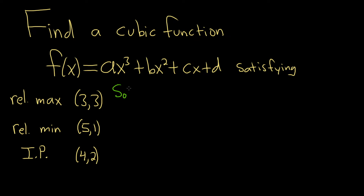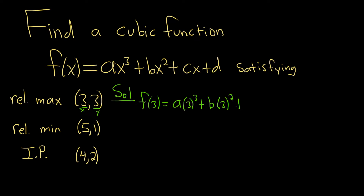Let's carefully work through this. The relative max is (3, 3). That means if you plug 3 into this function you get 3, because this is the x value and this is the y value. So f(3) = a(3³) + b(3²) + c(3) + d = 3. Cleaning this up: 27a + 9b + 3c + d = 3.